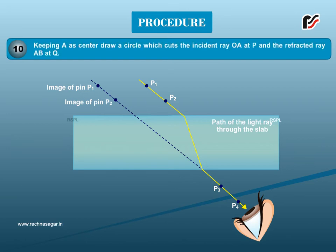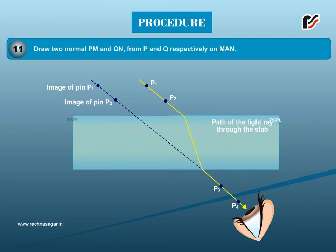Keeping A as center, draw a circle which cuts the incident ray OA at P and the refracted ray AB at Q. Draw two normals PM and QN from P and Q respectively on MAN.